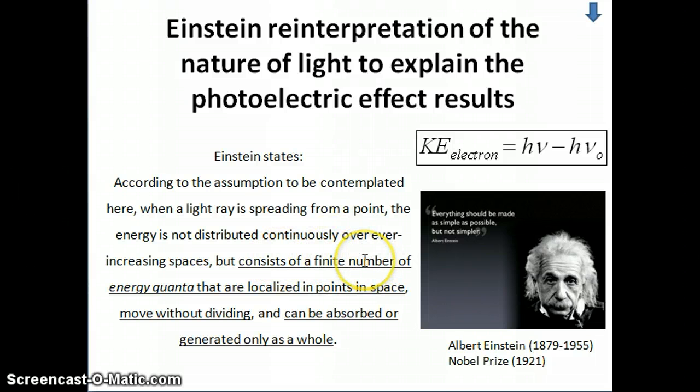So what that means is that light should be considered to consist of a bunch of discrete energy packets, which is what we call a photon now. And they are localized in points in space. So they're like particles, basically. If something is localized in points in space, that's basically a particle. They move without dividing. So it's a unit that's moving, has an energy, just like a particle. A particle has a mass, has a velocity, so it has energy.